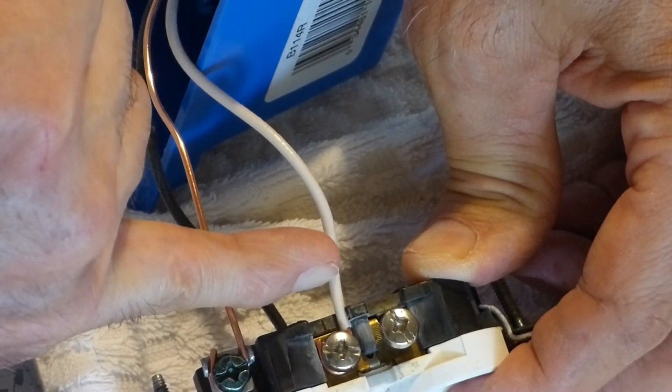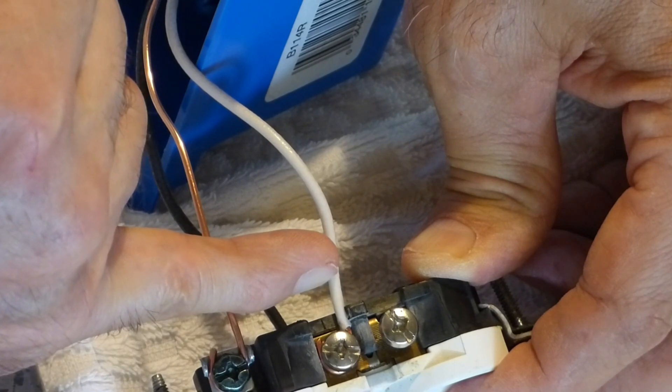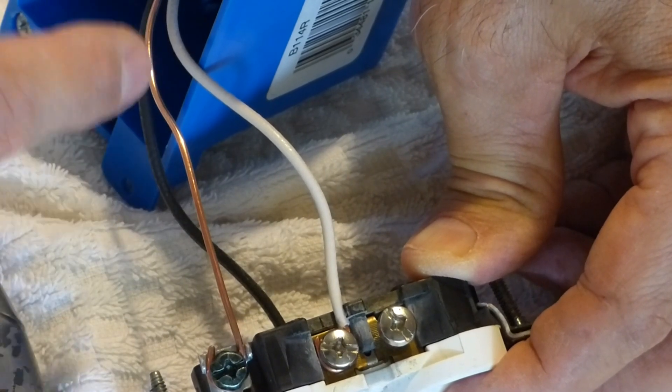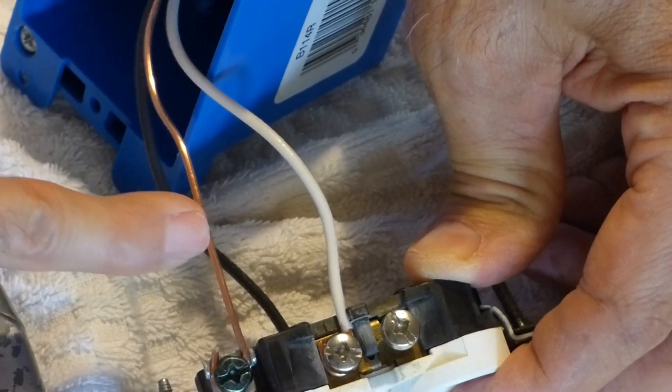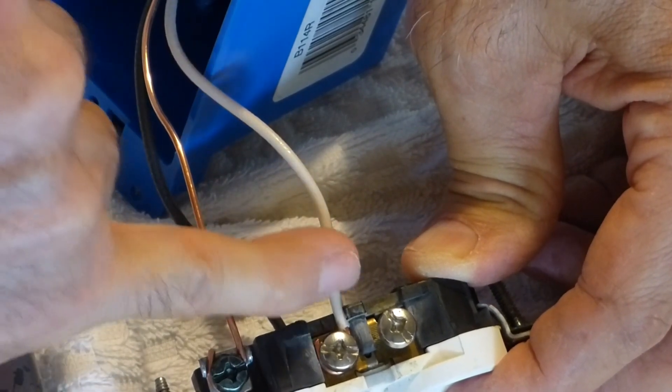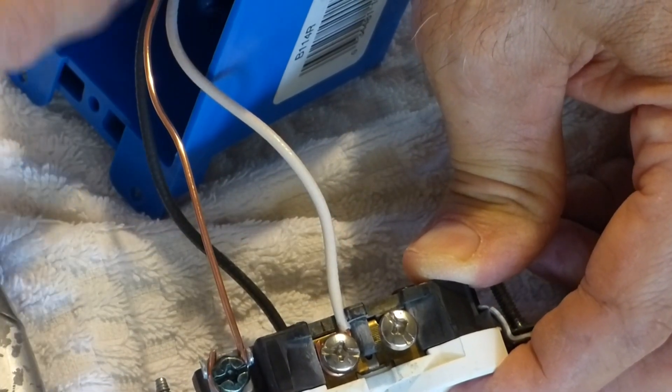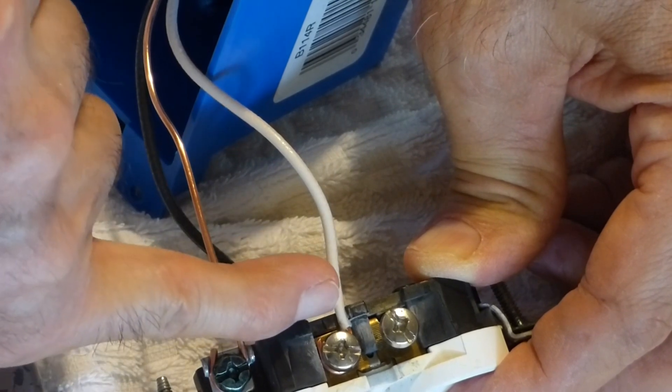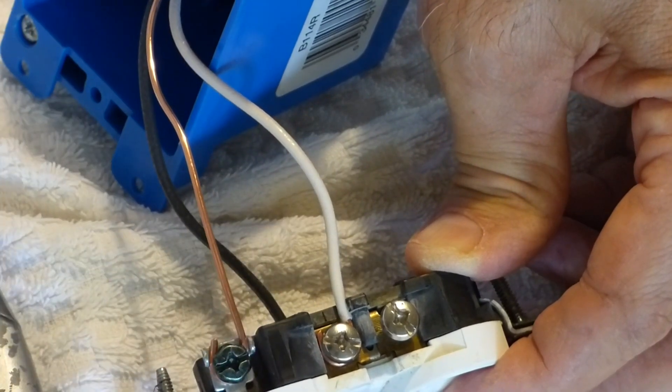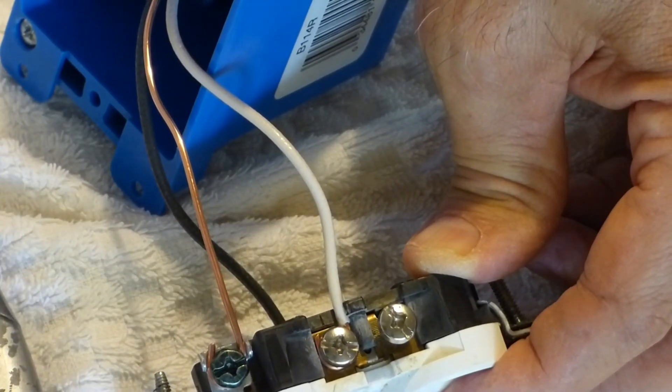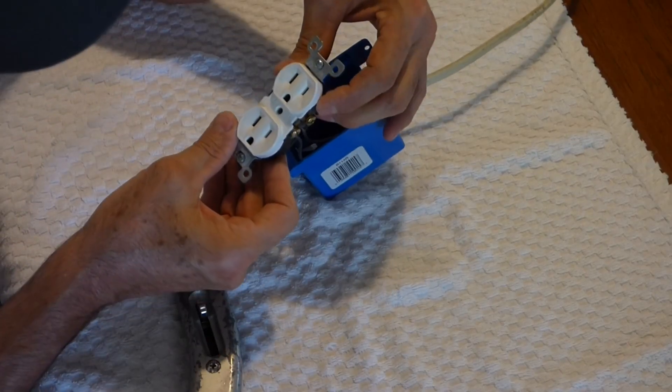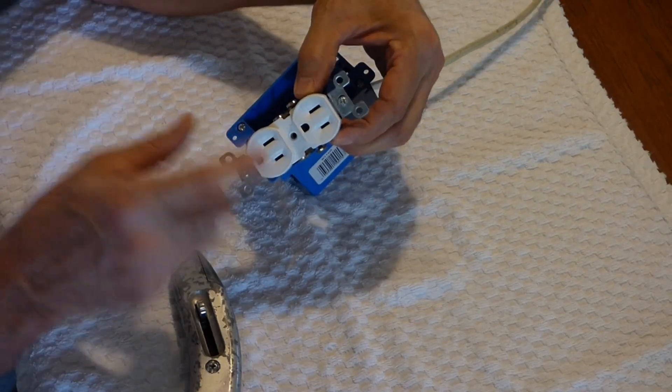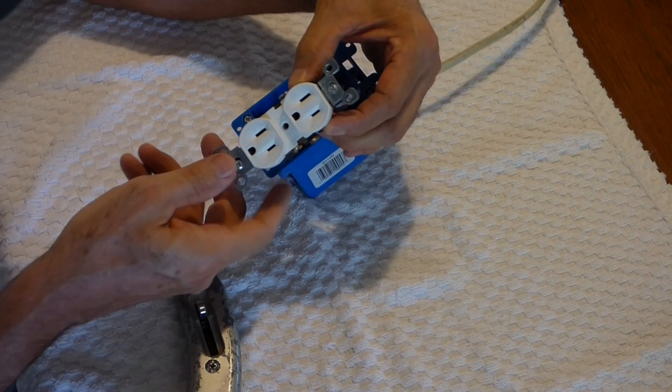If you get that strip down here and you've got bare wire showing here, it's possible when you tuck that wire in that this ground wire could touch that wire. Or if you have a metal box, that wire could be touched, and you're going to create problems with your receptacle.